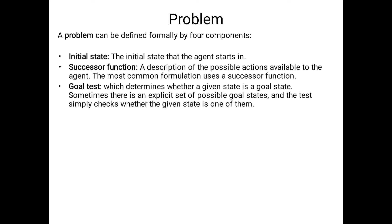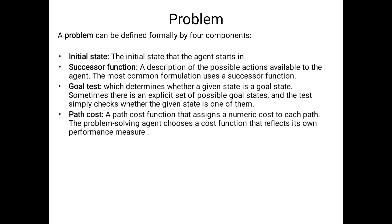The four components are: the initial state — where we start; the successor function — what actions we perform; the goal — what the actual goal of the problem is; and the path cost. For games, we consider the number of moves as the path cost when moving from a source to a destination.